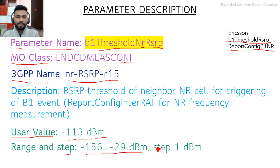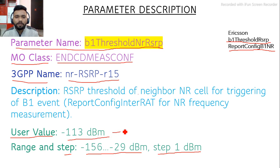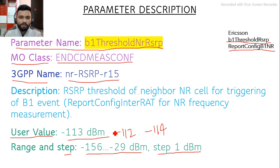Currently my B1 Threshold NRRSRP value is minus 113 dBm. If I want to change it I can go to minus 112 or minus 114, changing in steps of 1 dBm. If required, you can also change it by 5 dBm in one go.